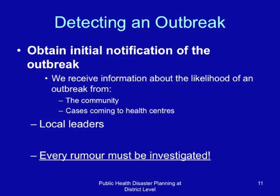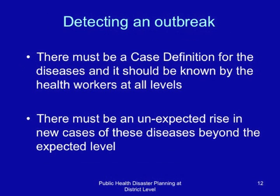In detecting an outbreak, we have to obtain initial notification. We receive information about the likelihood of an outbreak from the community, from cases coming to health units, and from local leaders. We therefore need an effective early warning system linked to communities. The golden rule in detecting outbreaks is that every rumour must be investigated. We must also have a case definition known by frontline health workers, and there may be need for a community case definition.